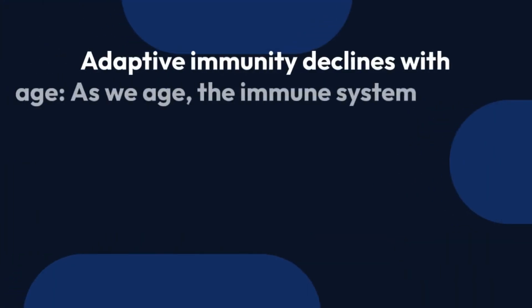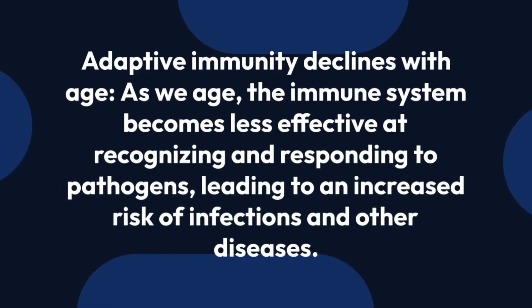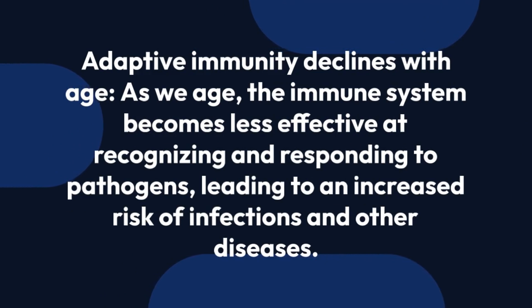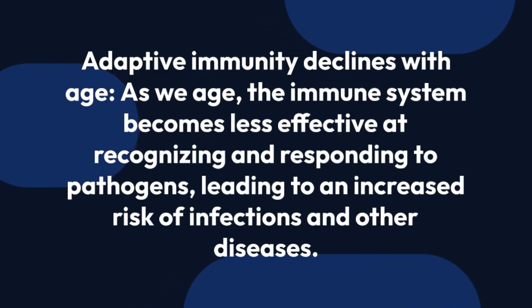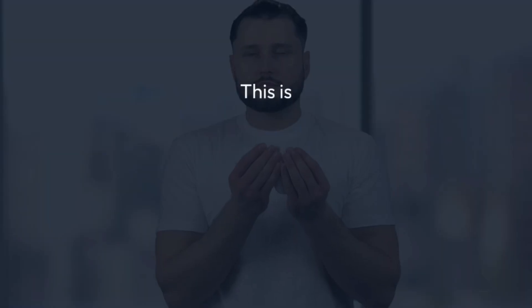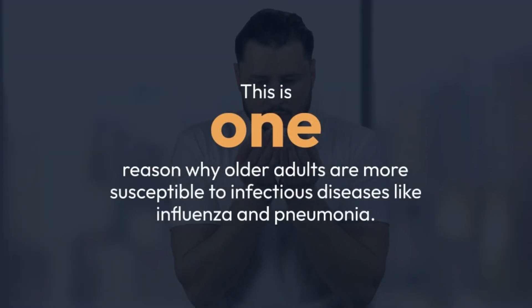Adaptive immunity declines with age. As we age, the immune system becomes less effective at recognizing and responding to pathogens, leading to an increased risk of infections and other diseases. This is one reason why older adults are more susceptible to infectious diseases like influenza and pneumonia.